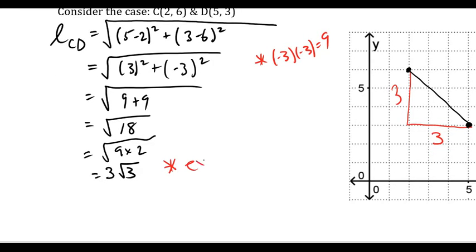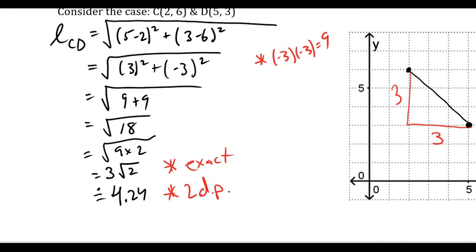For an exact answer, the square root of 18 equals the square root of 9 times 2, which is 3 root 2. Approximately, that's 4.24, rounded to two decimal places. The instructions will tell you what you're supposed to do — whether it wants exact answers or rounded to one or two decimal places. If it's a word problem, like money, two decimal places is standard. But almost always the instructions will tell you what it's looking for.